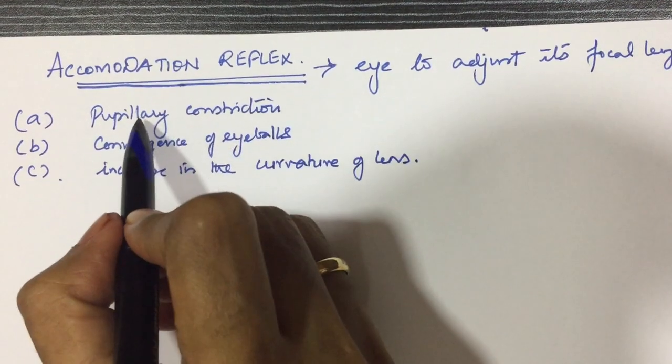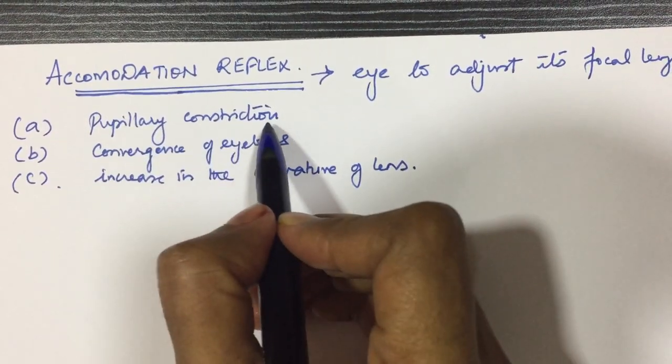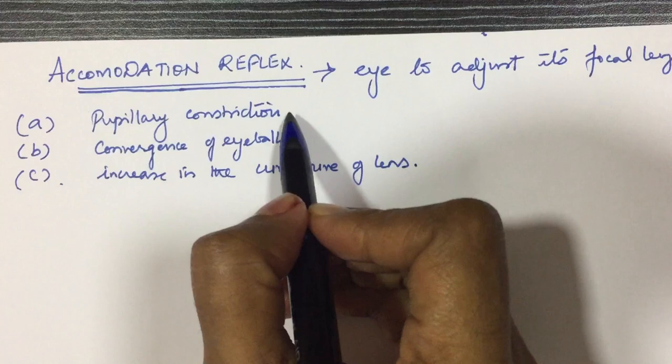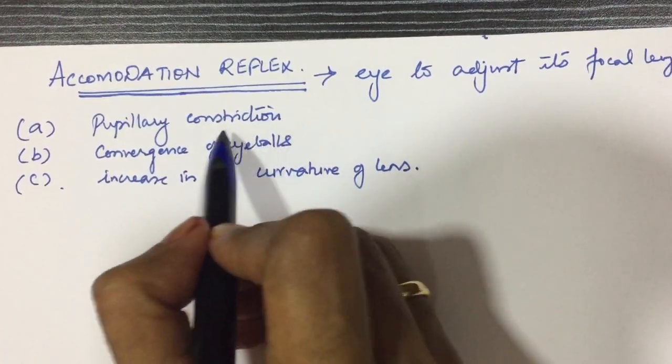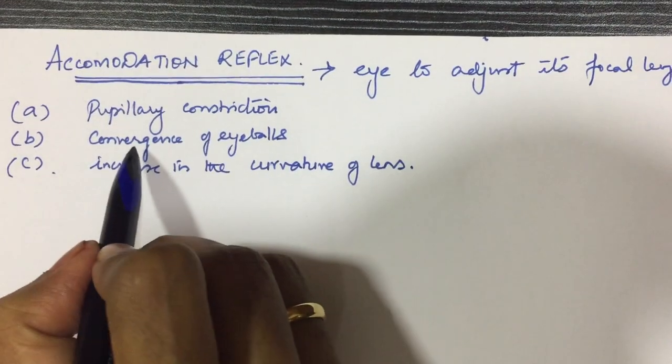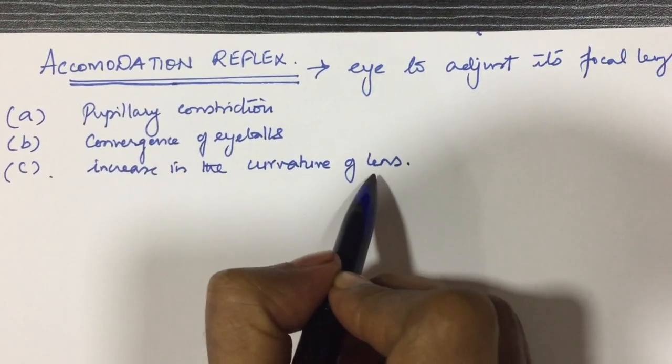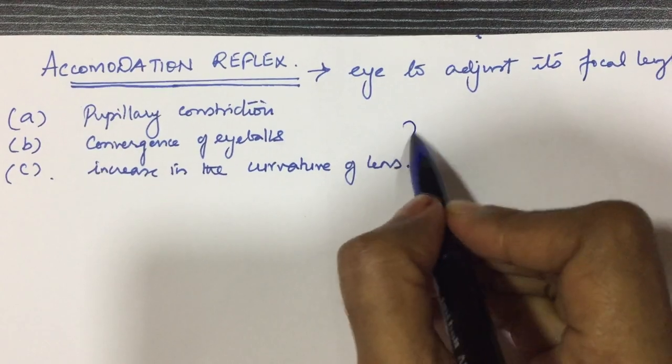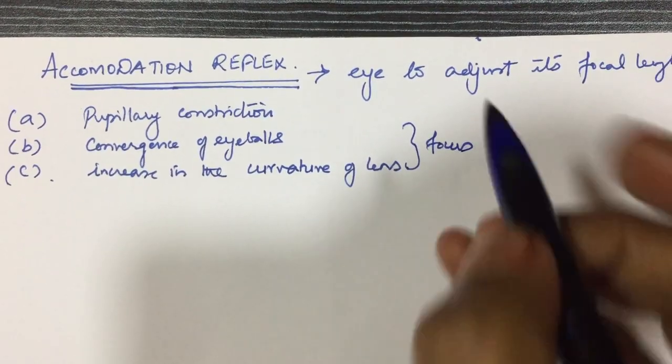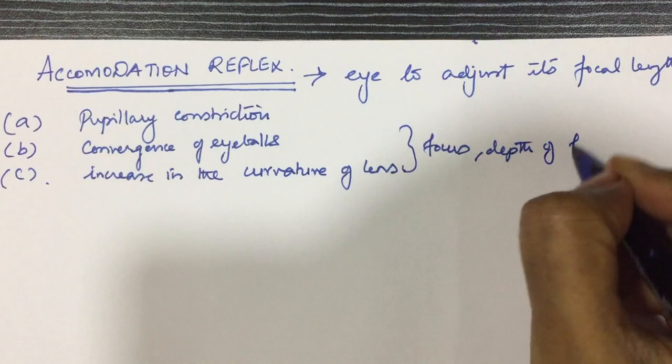When the pupil constricts it prevents the divergence of light rays and concentrates the light rays on the nearby objects. The convergence of eyeballs and increase in the lens curvature helps to focus the nearby objects and increases the depth of focus.